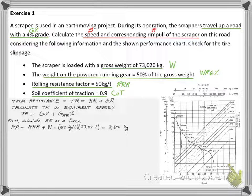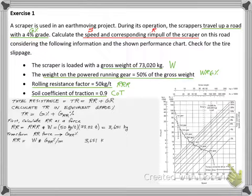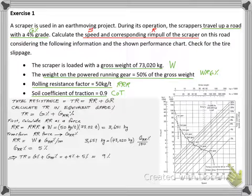We first calculate the RR force, then transform it to the equivalent grade value of five percent. We can then add the grade and rolling resistances to get nine percent for the total resistance.